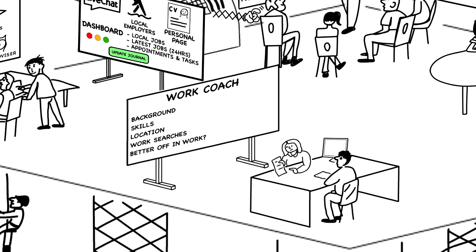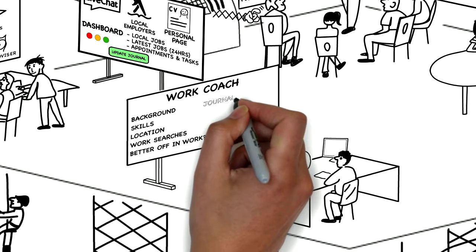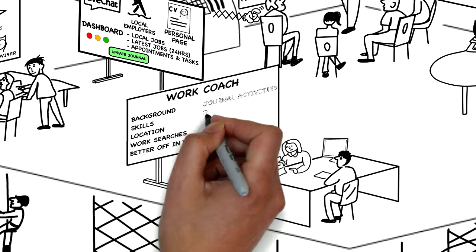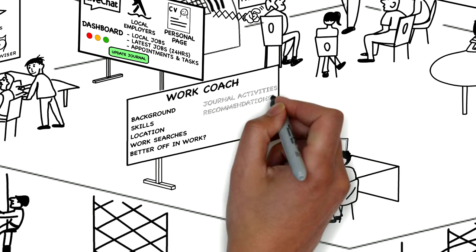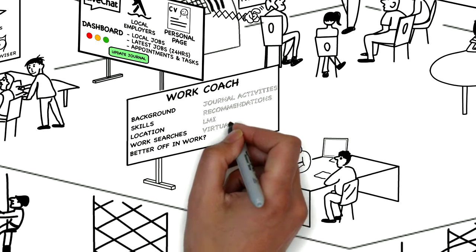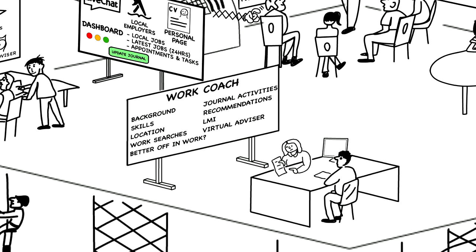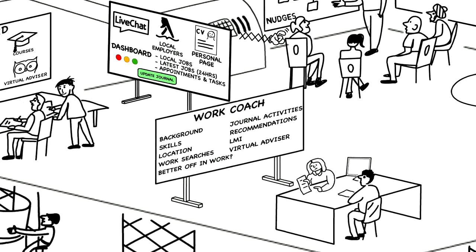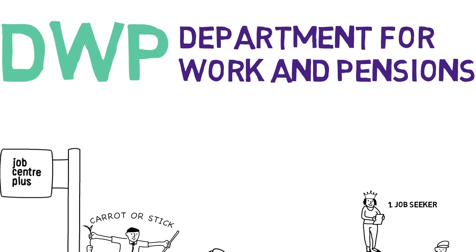The types of job the claimant has been searching for, together with their location and typical salary. The ability to see a better off in work calculation for the jobs applied for. The activities the claimant has entered in their journal. And previous guidance and recommendations made to the claimant. And LMI showing which local employers are hiring and local employment trends in the demand for skills. And as said earlier, the virtual advisor could provide recommendations on potential next steps for the claimant.